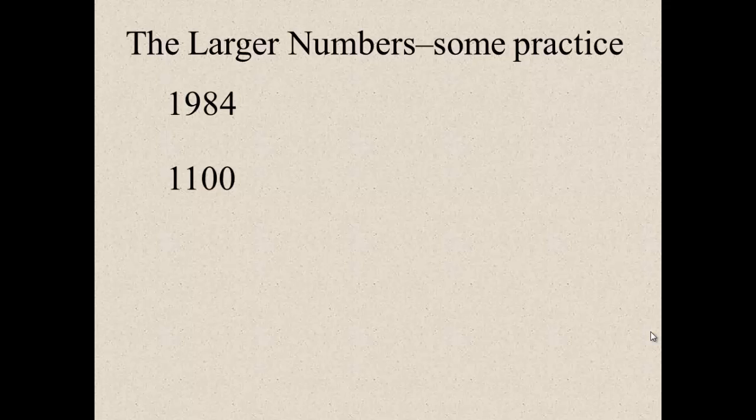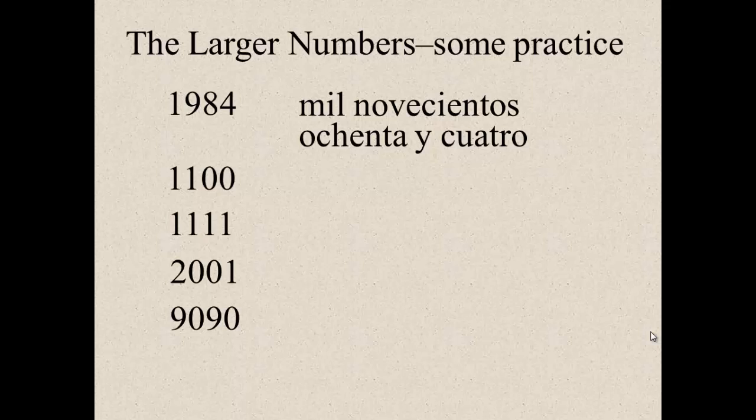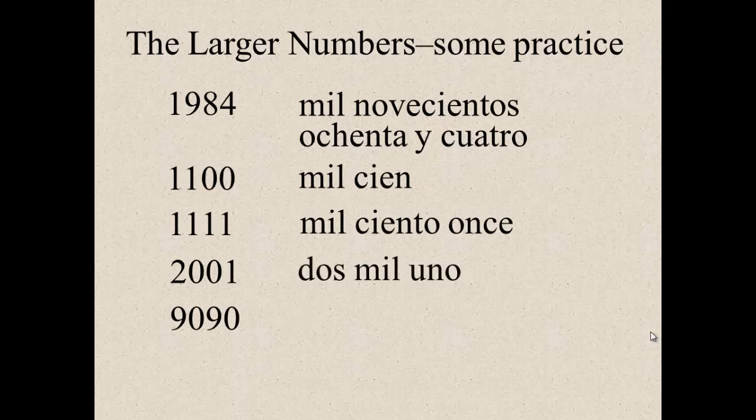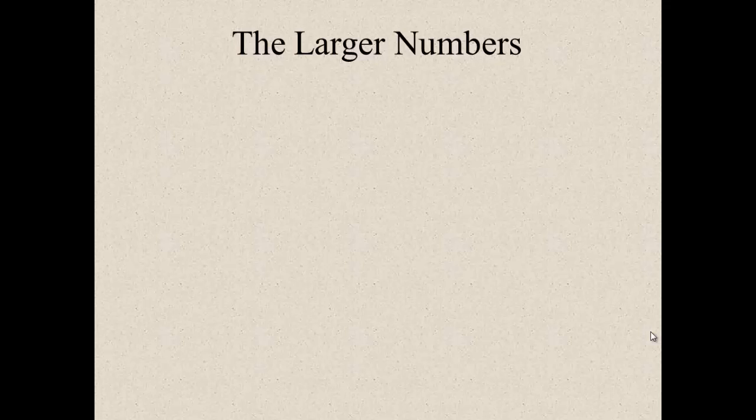Here's some more practice. Nineteen eighty-four, the year I was born. Eleven hundred. Eleven hundred and eleven. Two thousand and one. And nine thousand and ninety. Pause your computer and come back to this. All right, let's see how you guys did. Mil novecientos ochenta y cuatro. Mil cien. Mil ciento once. Dos mil uno. Nueve mil noventa. How would you say that we're in year 2013? Two thousand and thirteen. You should say dos mil trece.